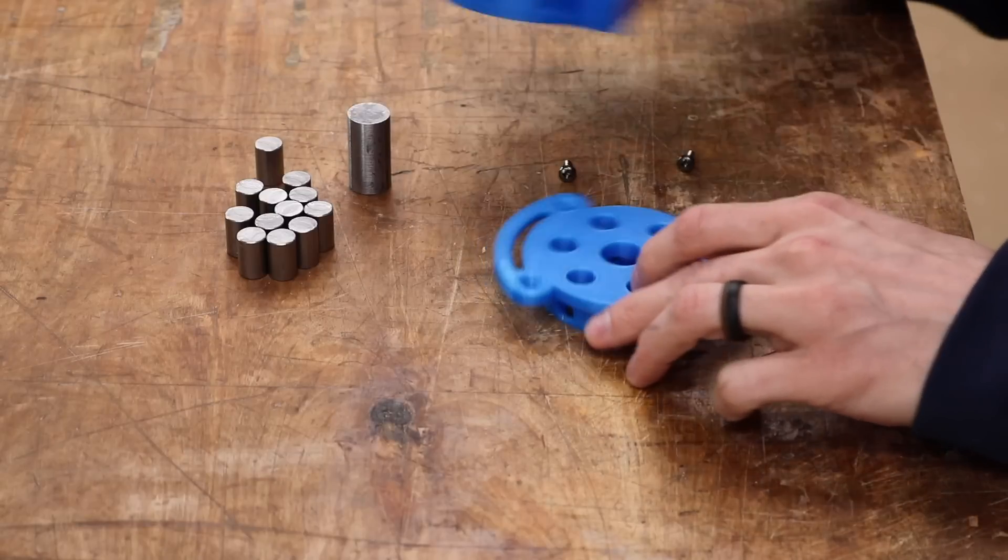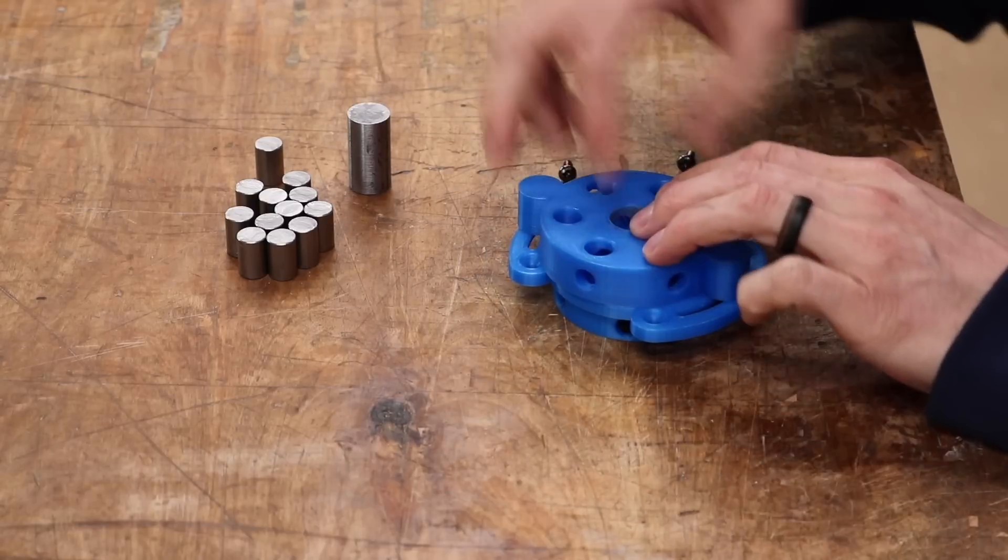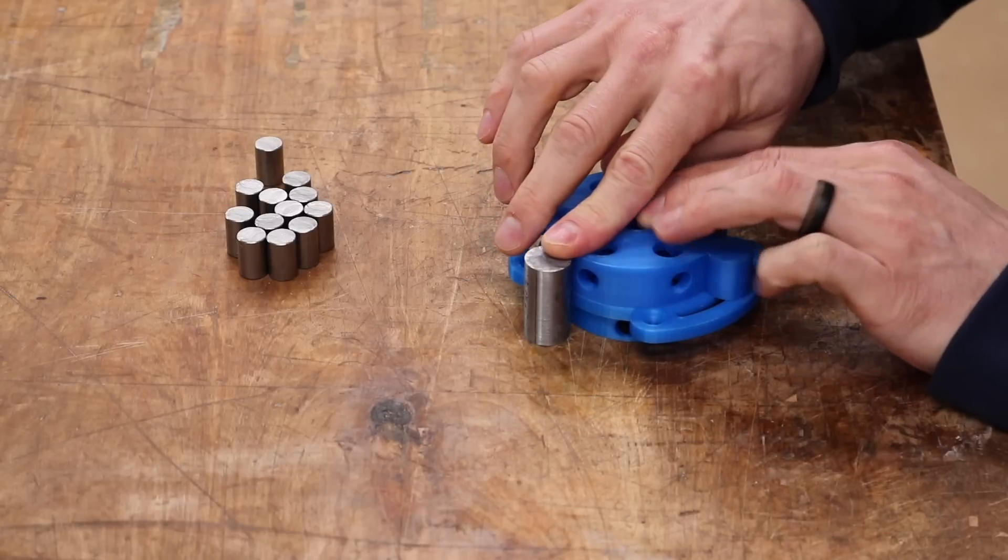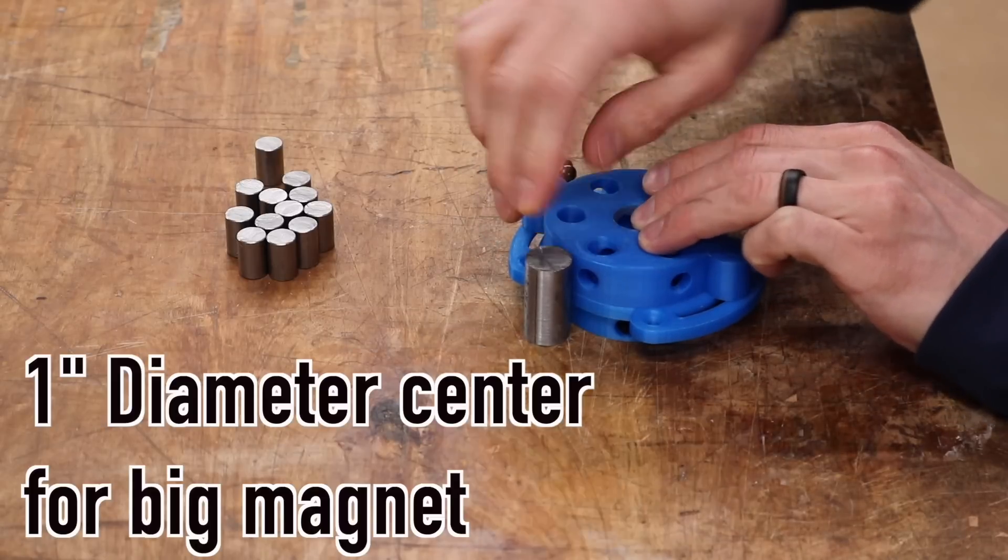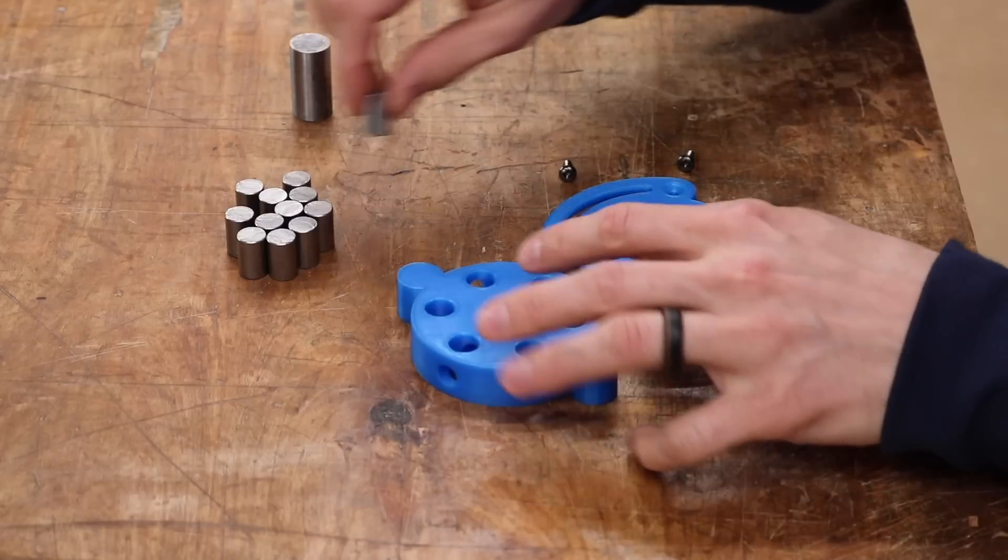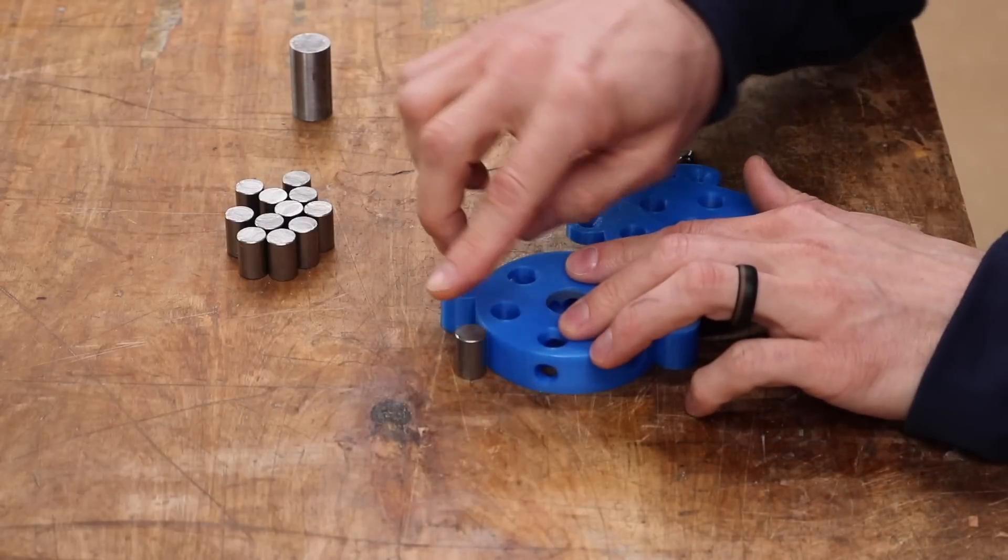So here's everything that we need to assemble the magnet. We have the top and bottom 3D printed sections and then a three quarter inch diameter center steel rod that's cut to the length of both top and bottom stacked together which is inch and a half for the small magnet.